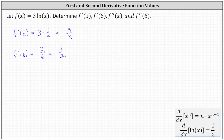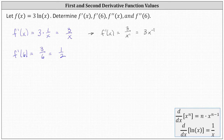Now we need to find the second derivative function, or f double prime of x, which is equal to the derivative of the first derivative. We know f prime of x is equal to three divided by x, which we can write as three divided by x to the first, which can also be written as three times x to the power of negative one.